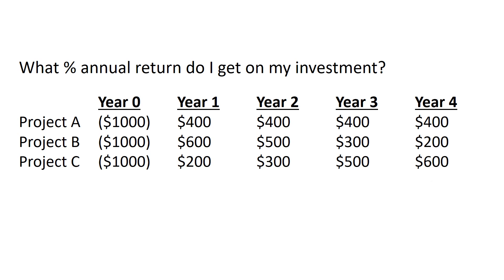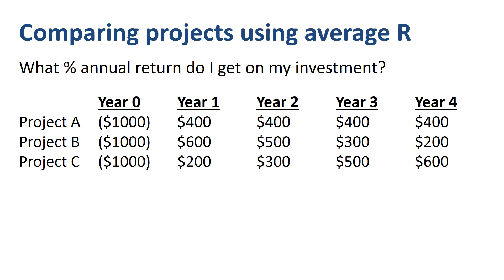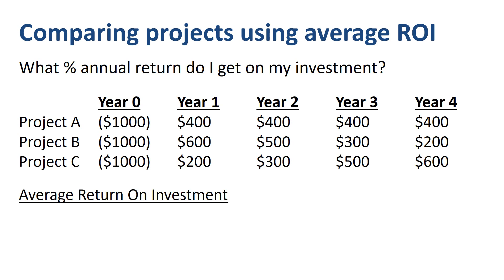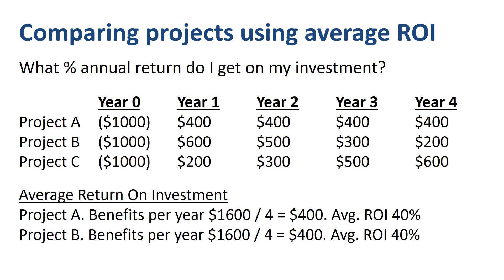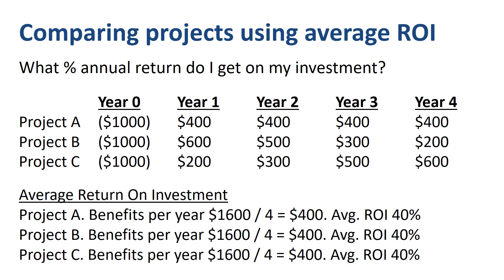How about using average ROI? In my opinion, things just get worse with average ROI. As each of the projects has $1,600 cumulative benefits over 4 years, the average benefits are $400 per year for each project. Average ROI would not help you to develop a preference for one project over the other, and fails to support your decision making.